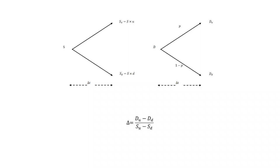We can write delta as D sub U minus D sub D, the value of the derivative if the stock goes up minus the value of the derivative if the stock goes down, divided by S sub U minus S sub D, the value of the stock if it goes up minus the value of the stock if it goes down.